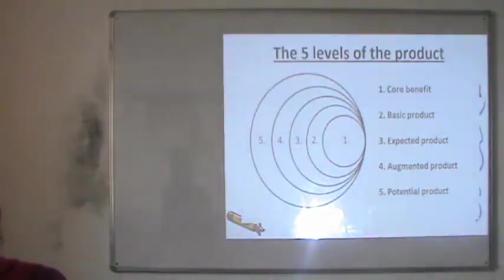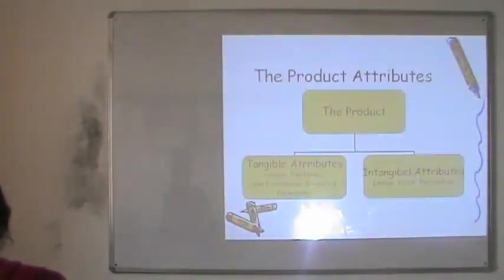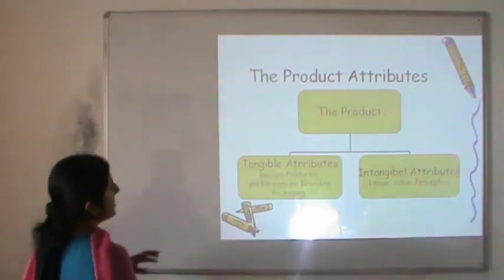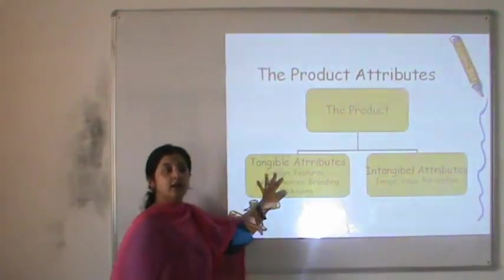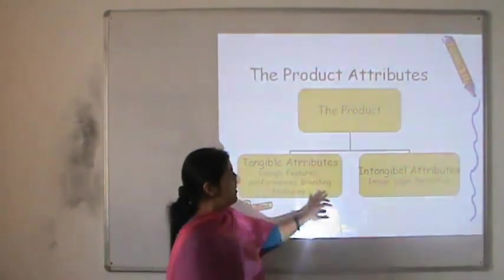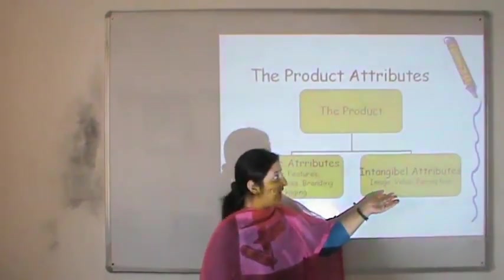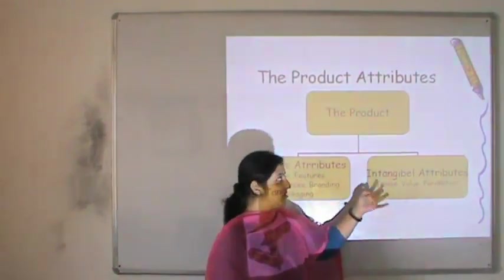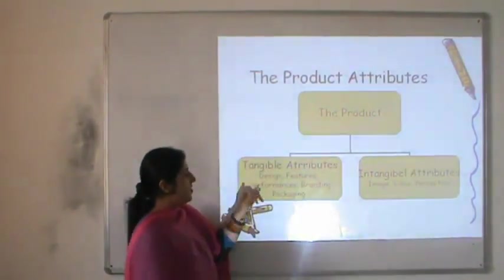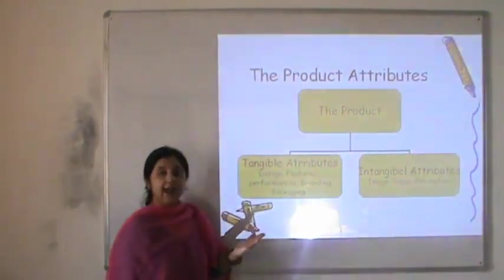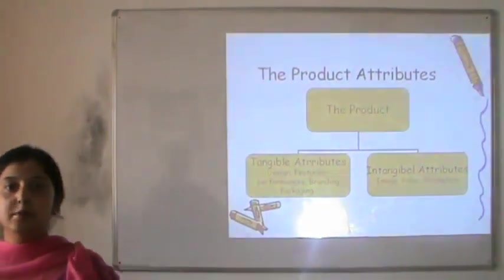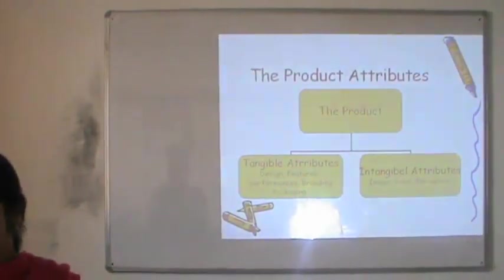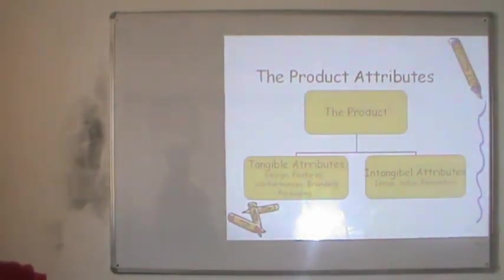A product consists of two parts: tangible parts and intangible parts. Tangible features can be seen, touched, and used repeatedly, whereas intangible aspects are one-timers that can only be felt, not seen or touched. Things like the design, features, branding, or packaging of the product form the tangible part, whereas intangible attributes consist of the image, reputation, value, and perception that the product conveys to the target audience.